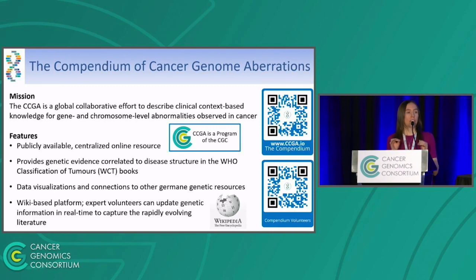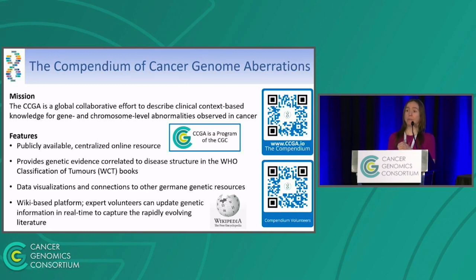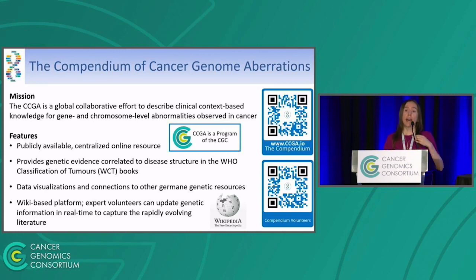In a nutshell, the blue books by the WHO are produced every three to five years, and the problem is genetics moves faster. So this can act as a companion resource to have real-time updating based on the wiki nature of the site for the genetic content with the diseases.